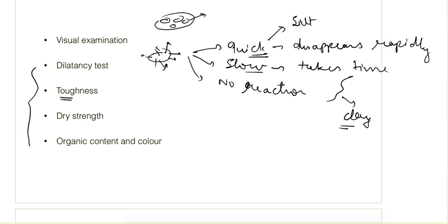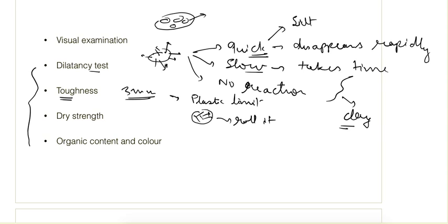The next test is the toughness test. We take the same sample used for the dilatancy test, dry it a little bit so it reaches its plastic limit, and then try to roll it into threads of 3mm. As it just starts to crumble, that indicates it has reached its plastic limit. We then knead the soil again and try to roll it into threads once more. If we can roll it again by applying high pressure, then the soil is termed as having high toughness.